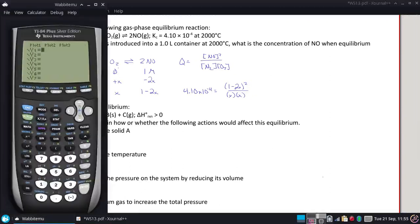Let's see what we get. So I have 1 minus 2X squared divided by X and divided by X equals 4.1 times 10 to the negative fourth. And we get, hopefully, a reasonable graph.